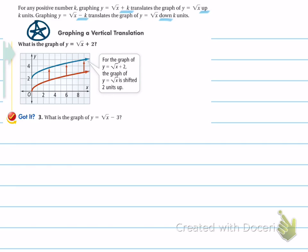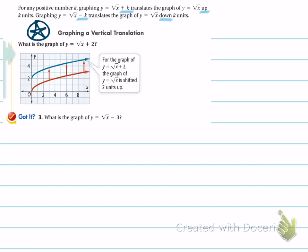Now let's talk about vertical translations. Whenever you take a number and add it to the square root function — in this case the variable k is used for the vertical translation — adding a number to a function makes the function move up. Subtracting a number moves it down. As you can see in this example, adding 2 shifts the function up 2 units. It looks exactly the same as the parent function, just shifted up. They are taking the parent function, shown in red, and shifting it up 2 units because that is what adding 2 does.